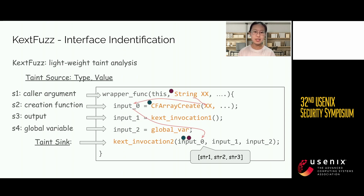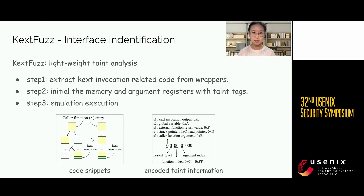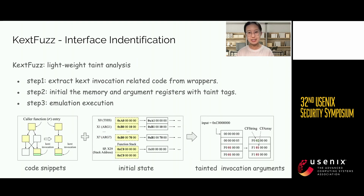For example, once KXTFuzz recognizes there is a variable created by the malloc function, it will know this field is a pointer. The taint analysis is implemented based on emulation execution. To save time, we only analyze the KXT invocation-related code paths. KXTFuzz groups the registers and memories into 32-bit units. In each unit, KXTFuzz uses the high bits to record the taint source and detailed information. Before emulation execution, KXTFuzz initializes the registers and memories with the encoded taint value, and the taint tag will automatically propagate during execution. Therefore, KXTFuzz does not need complex taint propagation rules.